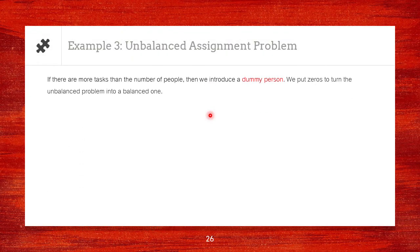Now, what about if there are more tasks than the number of people? If this is the case, we introduce a dummy person. Similarly, we put zeros to turn the unbalanced problem into a balanced one.